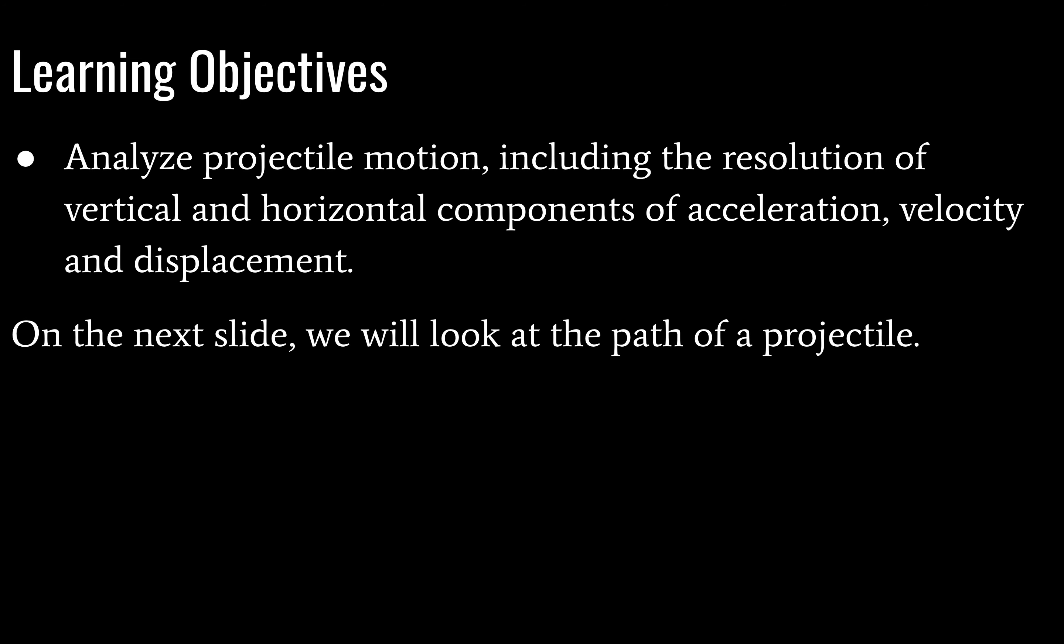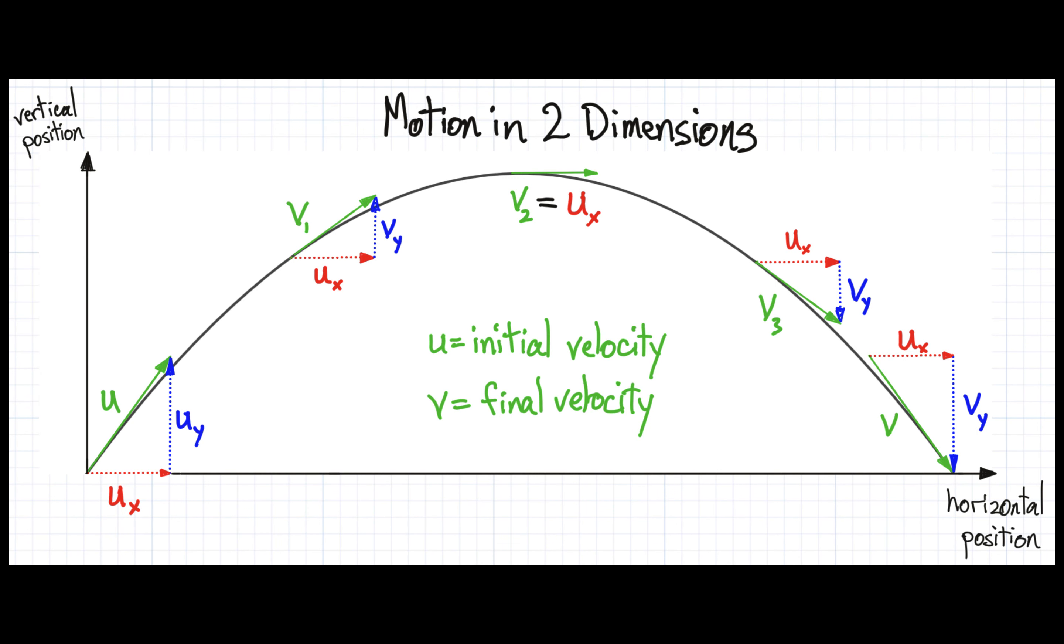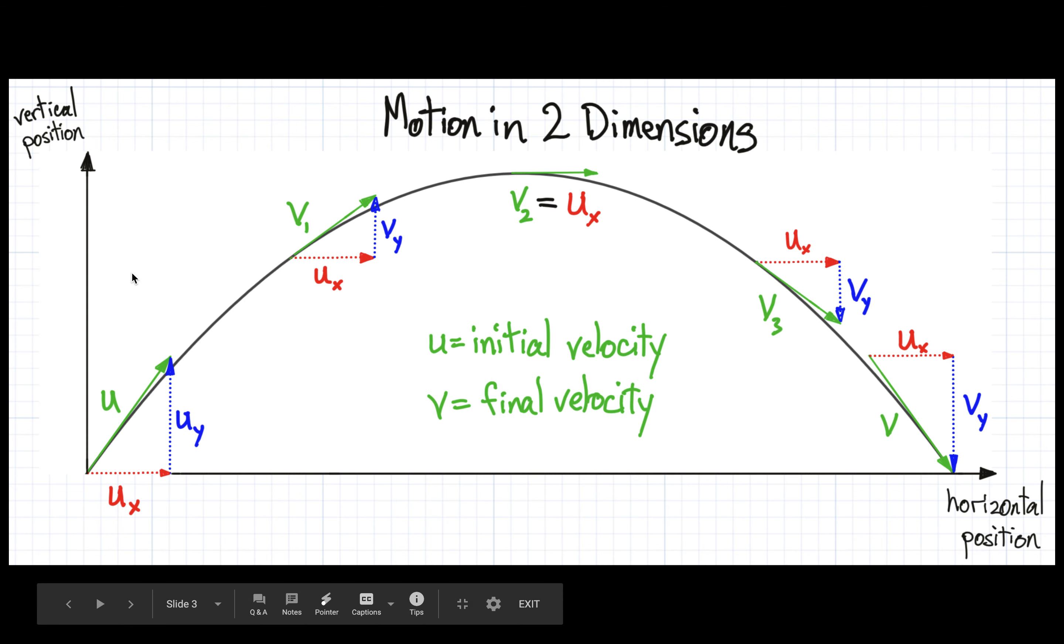On the next slide we're going to look at the path of a projectile, and the x-axis of this graph will show you the horizontal position rather than time. So here's what it looks like. You can see here on the y-axis we have vertical position, on the x-axis we have horizontal position.